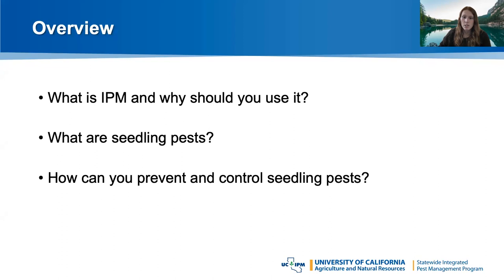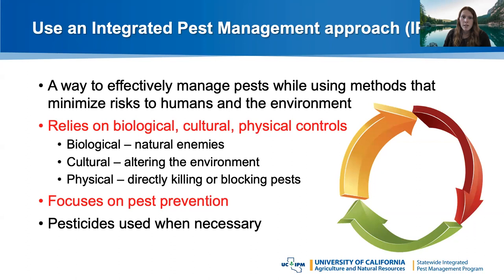We're going to discuss what IPM is and why using an IPM approach can be helpful in all kinds of situations. Then we'll talk about identification of several common seedling pests and how we can prevent and control them. IPM — integrated pest management — is a way to prevent pest problems. It's a more sustainable and environmentally friendly way to manage pests, not just in the garden, but in the home and landscape as well.